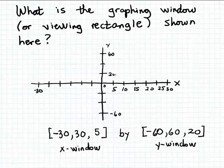This tick mark must correspond to 20. This tick mark would correspond to 40, and of course the last tick mark would correspond to 60. So altogether, here's how we would indicate our graphing window: [-30, 30, 5] for the x-window by [-60, 60, 20], that's the y-window.